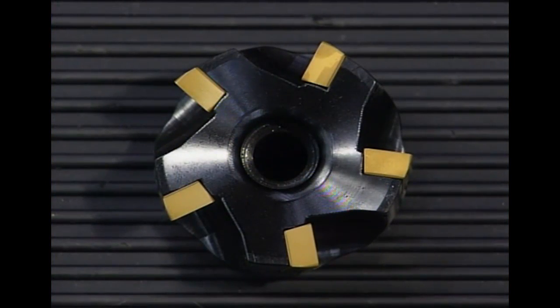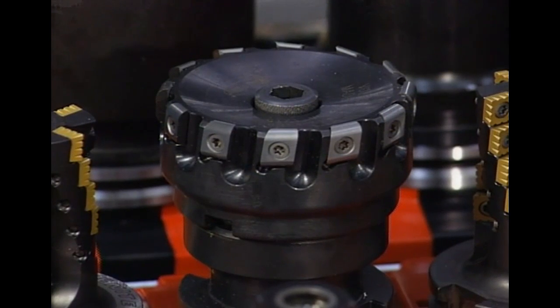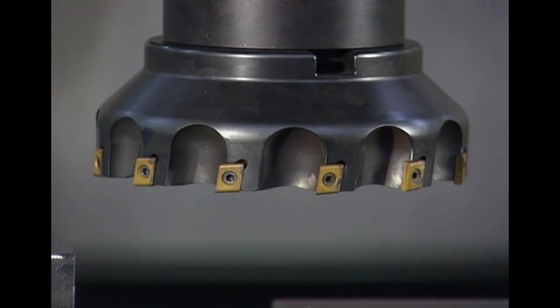Face mills may be coarse pitch, fine pitch or extra fine pitch depending on the number of inserts relative to the tool's diameter. The coarser the pitch, the larger the gullet size. Milling inserts with a large corner radius or a wiper flat provide a fine surface finish.